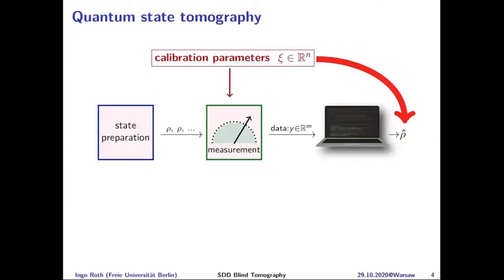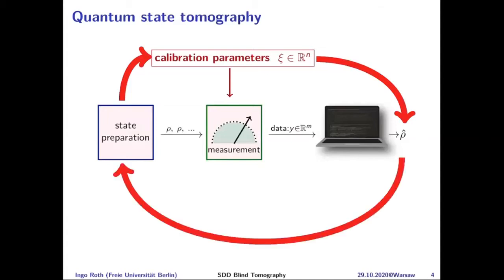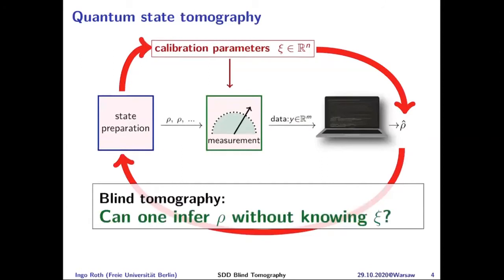In order to calibrate a measurement device, you typically need high-accuracy state preparation, but improving state preparation was the very first task we started with — so this closes a vicious cycle. To improve state preparation you need highly calibrated measurement devices, but calibration also depends on how well you can control states. The question we want to ask is: can we somehow break this vicious cycle?